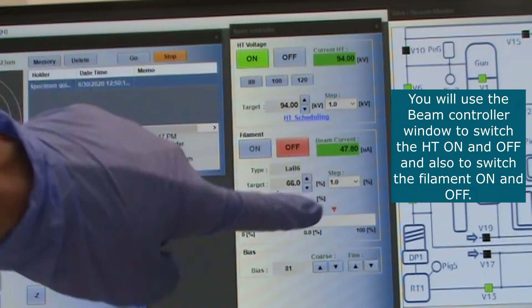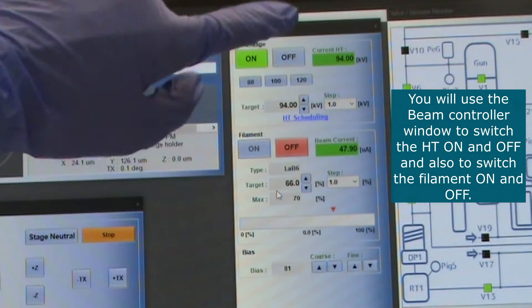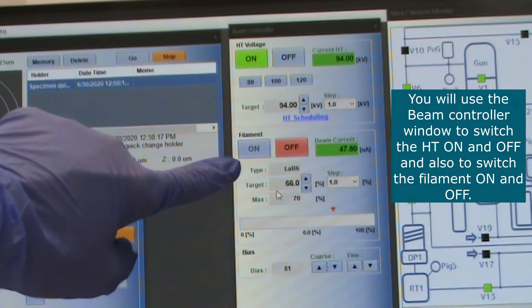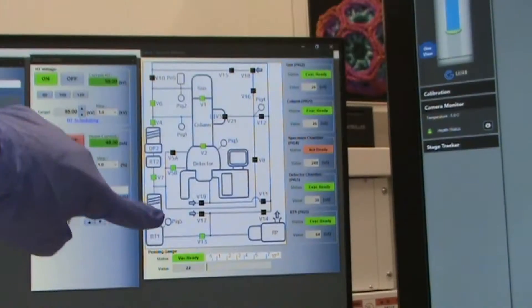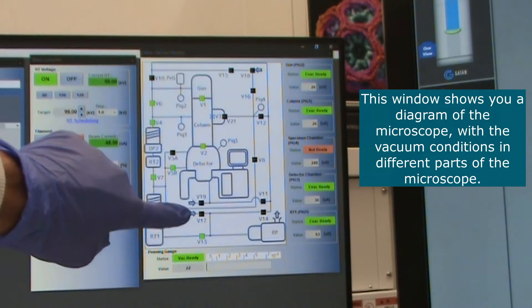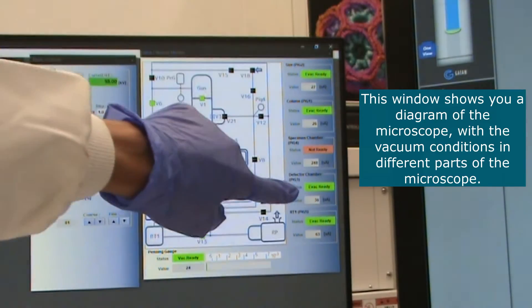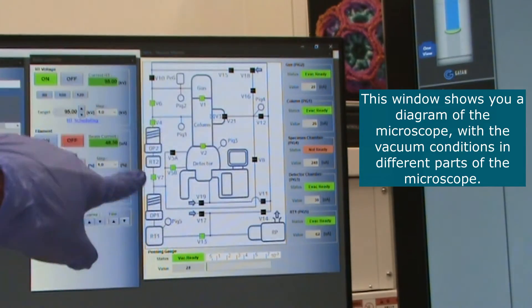You will use the beam controller window to switch the HT on and off and also to switch the filament on and off. This window shows you a diagram of the microscope with the vacuum conditions in different parts of the microscope.